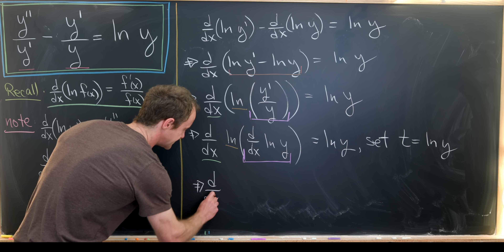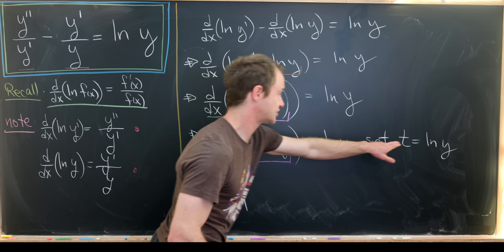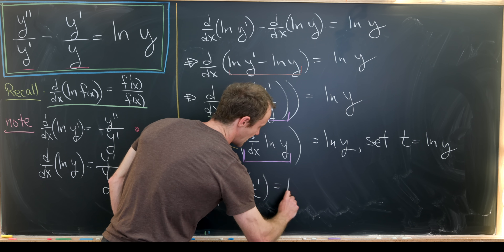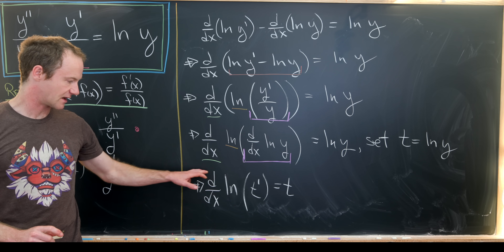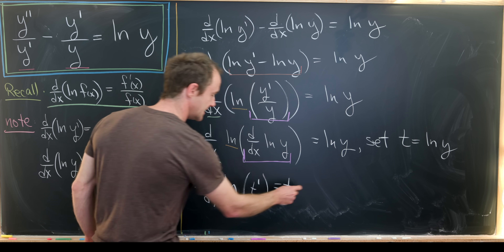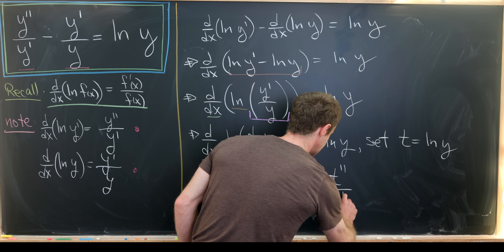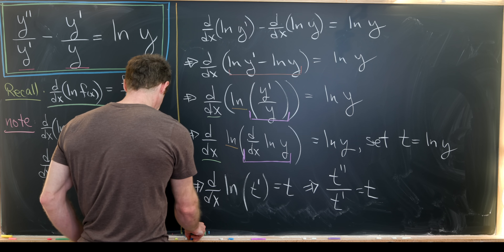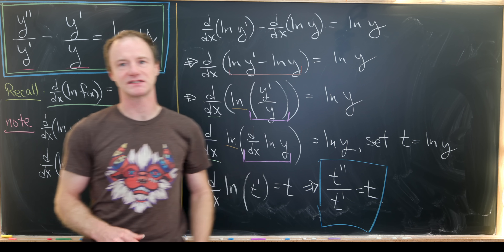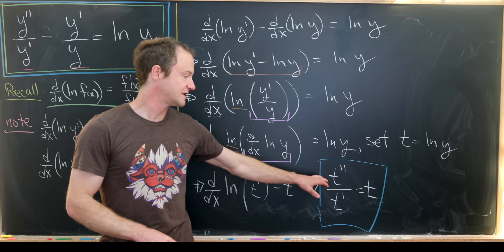Rewriting the equation using t = ln(y): we have d/dx [ln(d/dx [ln(y)])] = ln(y), and since ln(y) = t, the inner derivative d/dx[ln(y)] becomes t'. So we have d/dx[ln(t')] = t, and applying the logarithmic derivative again gives us t'' / t' = t. We've reduced this highly non-linear equation to a slightly less non-linear one — at least there are no logarithms now.